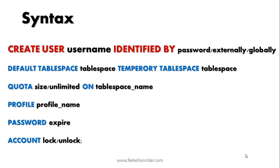There are three ways of authenticating a user. First is password. The PASSWORD clause lets you create a local user and indicates that the user must specify a password to log on to the database. Remember, passwords are case sensitive. Second is EXTERNALLY. By using the EXTERNALLY clause you can create an external user whose authentication is handled by an external service, such as your operating system.